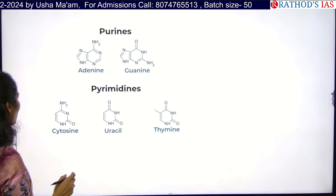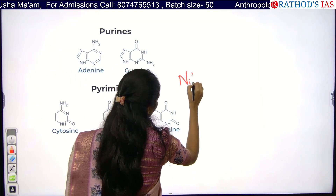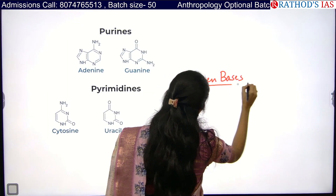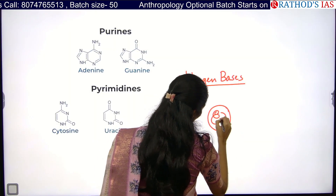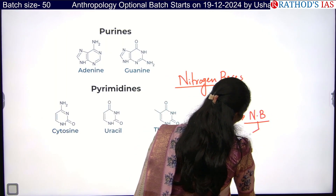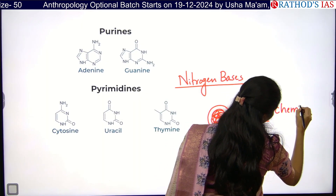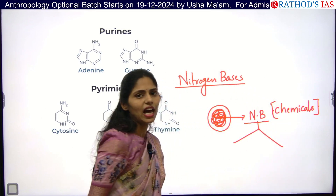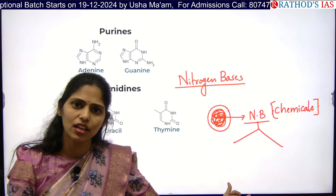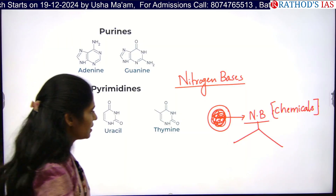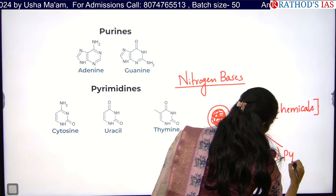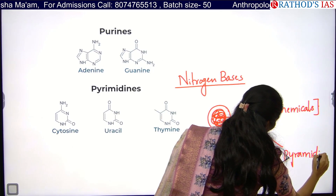Inside the nucleus we have genetic material — DNA. We have nitrogen bases there, and these nitrogen bases are chemicals present inside our nucleus. We have two types of nitrogen bases: the first is purines and the second is pyrimidines.